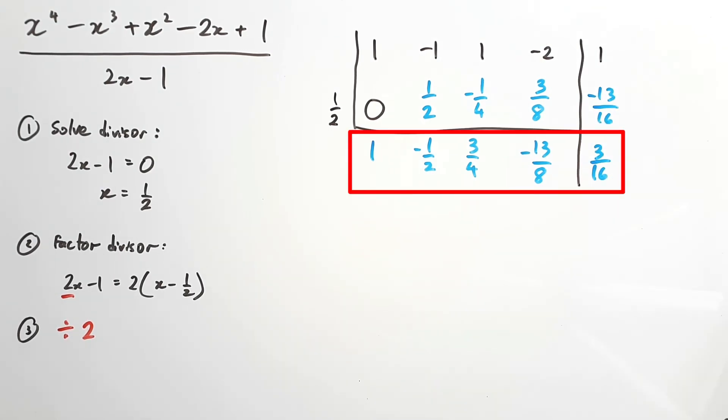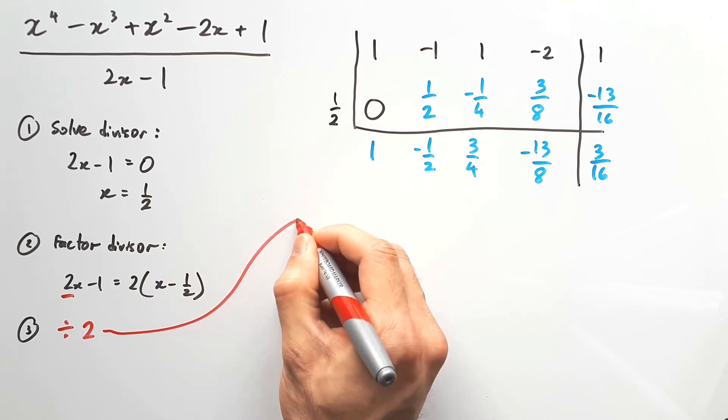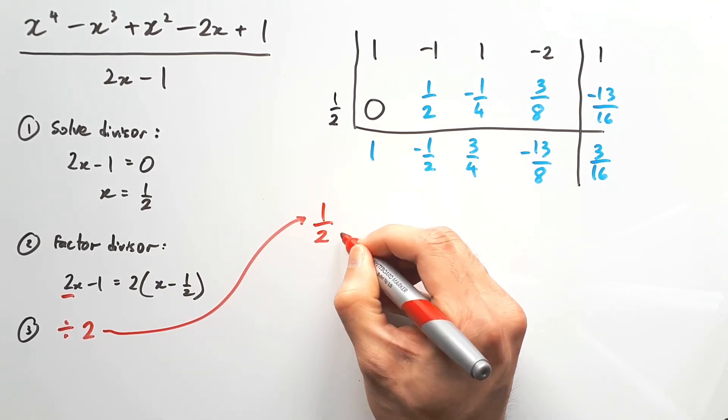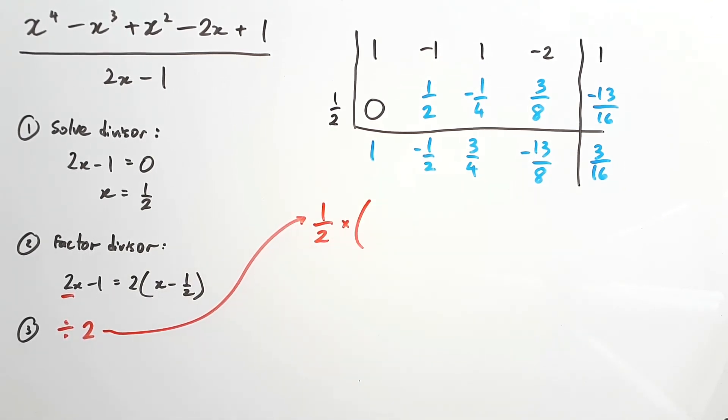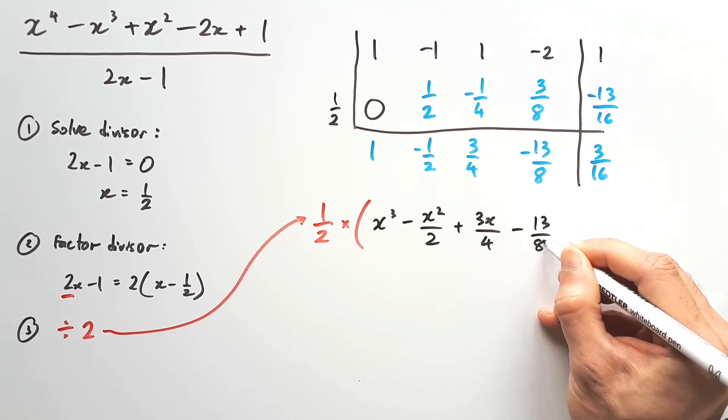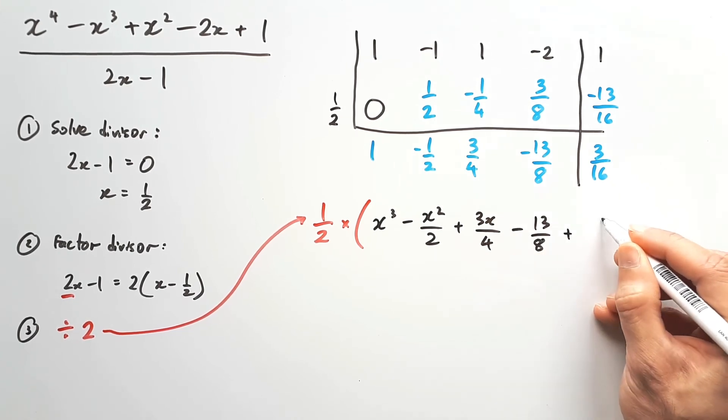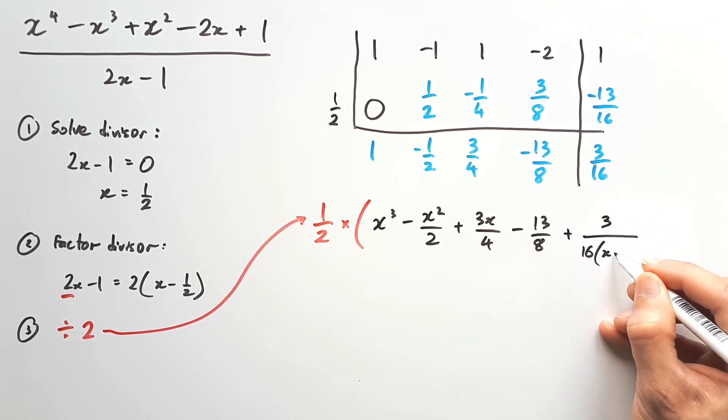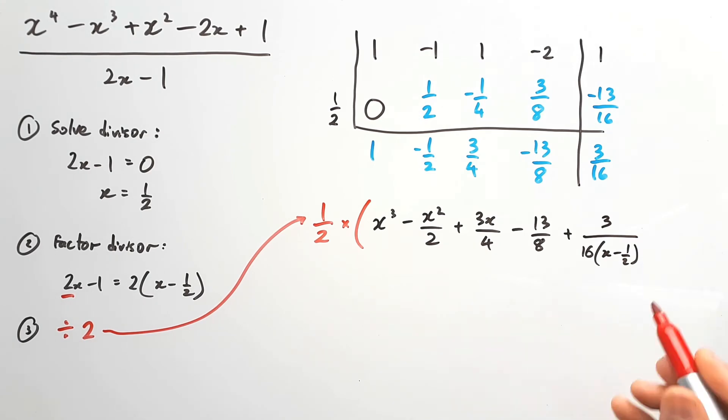So here we have 1, negative half, 3 on 4, negative 13 on 8, and 3 on 16. So from here, remember, your answer is going to divide by 2. You can write that as a half outside, so half times whatever you're going to write as your quotient and your remainder, which is x cubed minus x squared on 2 plus 3x on 4 minus 13 on 8 plus 3 on 16 times that temporary divisor, x minus half.